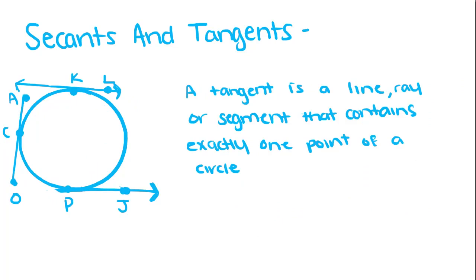Now a tangent is a line, ray, or segment that contains exactly one point of the circle. So it touches the circle at one point and only one point.